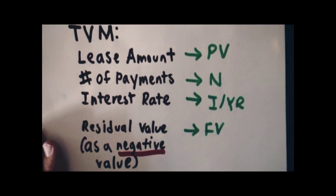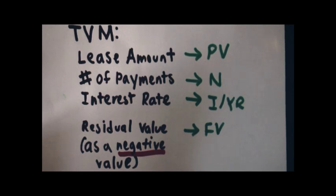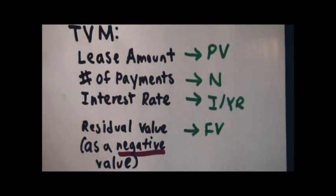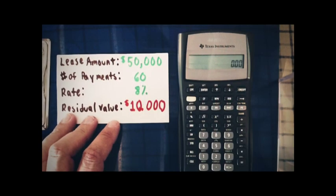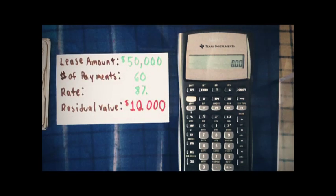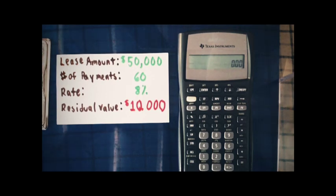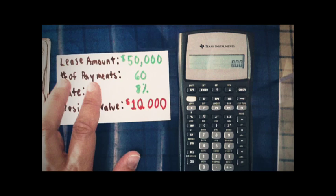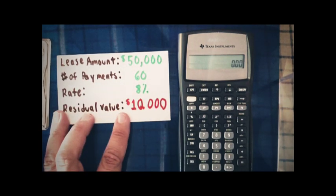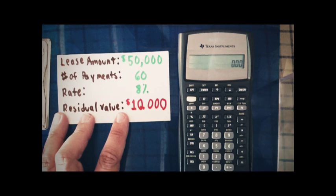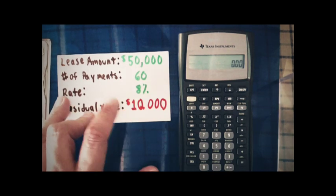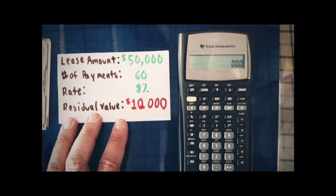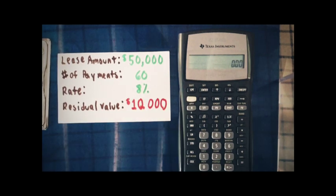I'm going to show you two examples of how this works. First, with the Texas Instruments BA2 Plus calculator. Our first example is to calculate the payment of a lease of equipment which, at the time of the lease, has a value of $50,000. At the end of five years, or 60 monthly payments, the residual value is $10,000, and the lease is financed at 8%.